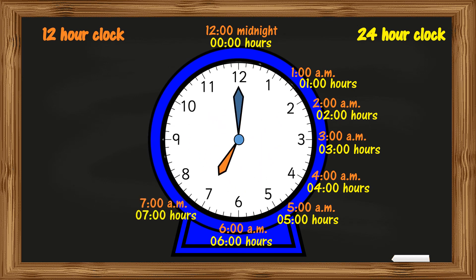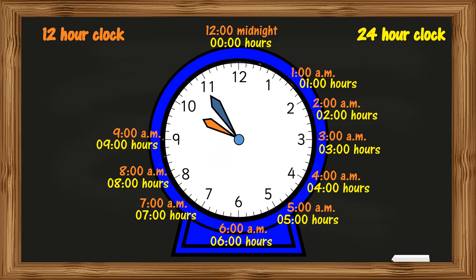6am 0600 hours. 7am 0700 hours. 8am 0800 hours. 9am 0900 hours. 10am will be 1000 hours.